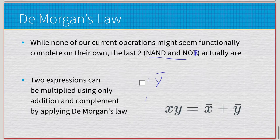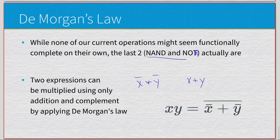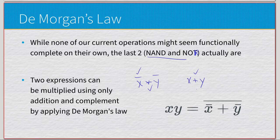For NAND: take x times y, negate the inputs, and apply De Morgan's law. We get positive (non-complemented) x plus positive y — that's addition. So NAND already gives us complement and multiplication; applying De Morgan's law yields addition. Both NAND and NOR, by virtue of containing two operations and using De Morgan's law to derive the third, constitute functionally complete systems.